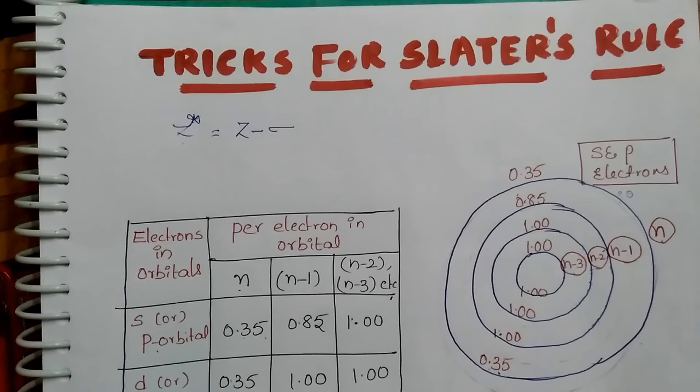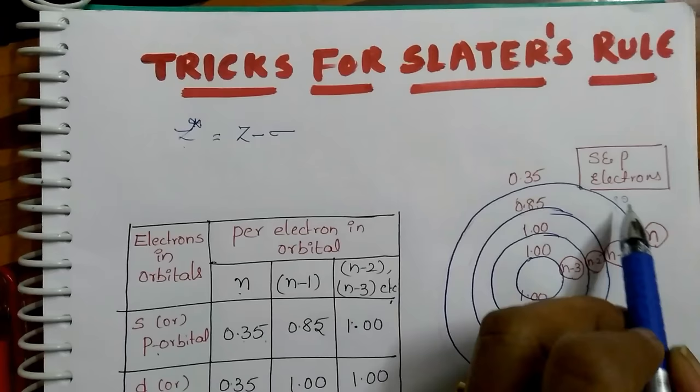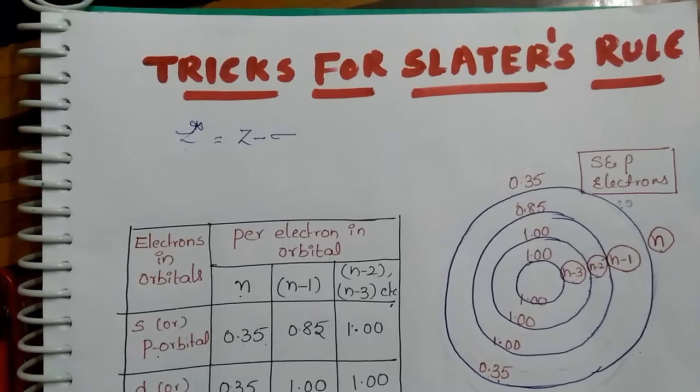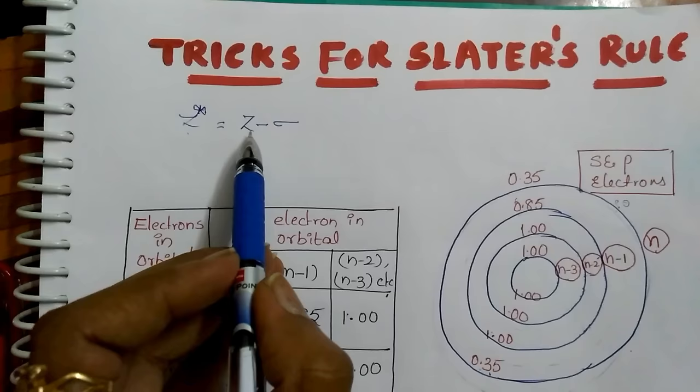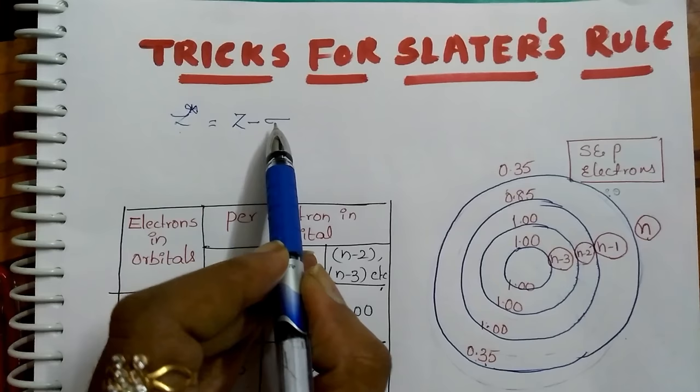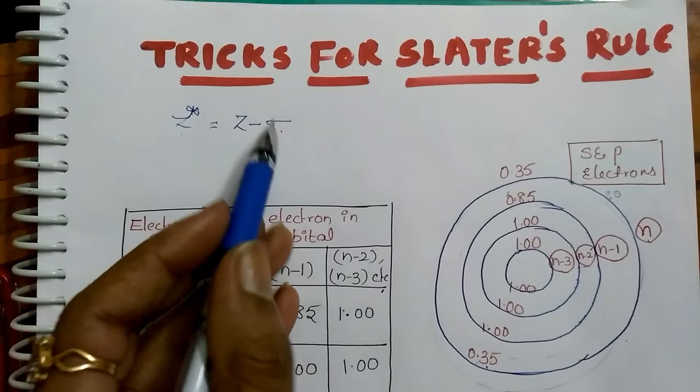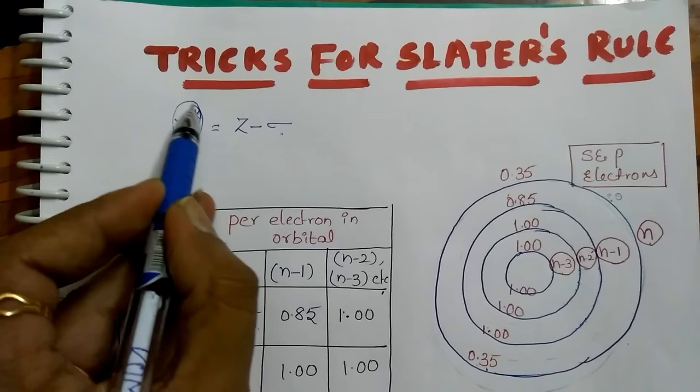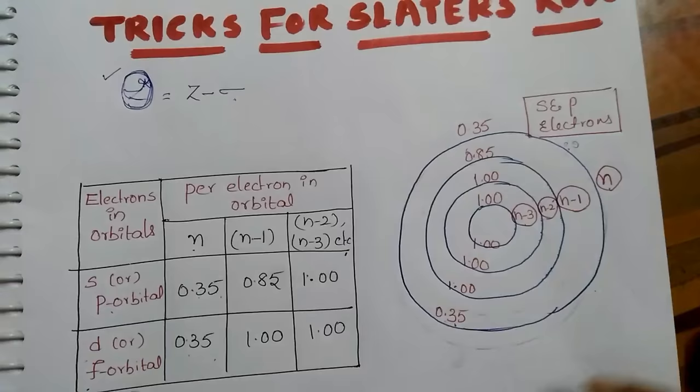We are going to find this effective nuclear charge. Because of the presence of more electrons, the electron will be less attracted by the nucleus. This effective nuclear charge can be found using the formula Z* = Z minus sigma. Z is the atomic number and sigma is the screening constant. If you find the screening constant, you can determine the effective nuclear charge for that particular electron.